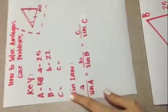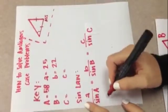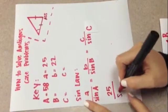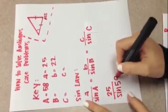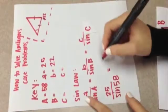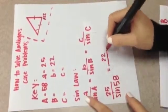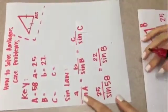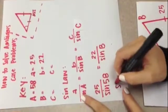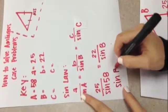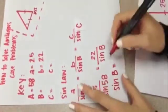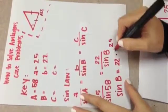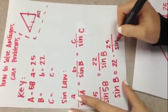With this information, we can deduce that 25 over sine 58 is equal to 22 over sine B. If we cross multiply, we will be getting that sine B is equal to 22 times sine 58 over 25.